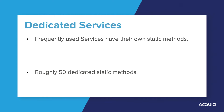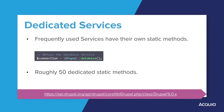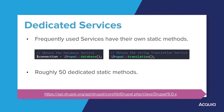As we recently learned, we can obtain an object to any service by using the generic Drupal service method. It turns out, though, that some services are so commonly used, there is a global Drupal class that provides static methods to access these most common services. These static methods are found by examining the Drupal class documentation. For example, \Drupal::database() will return the database service, or \Drupal::translation() will return the string translation service. There are around 50 dedicated static methods to access these commonly used services. Remember to modify the URL depending on which specific version of Drupal you are using.